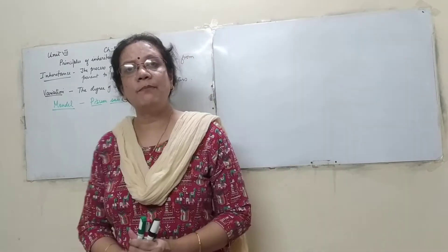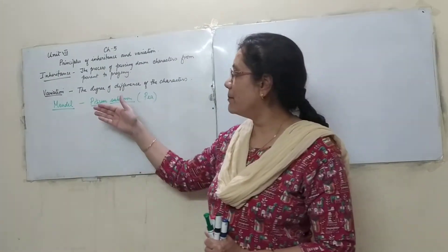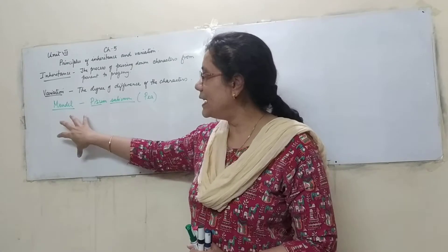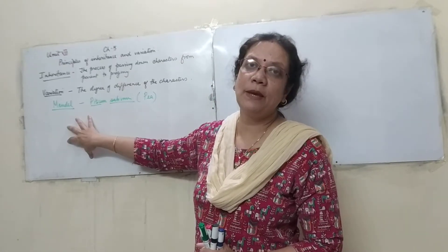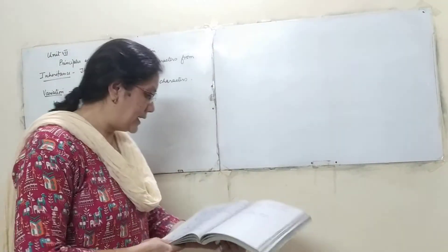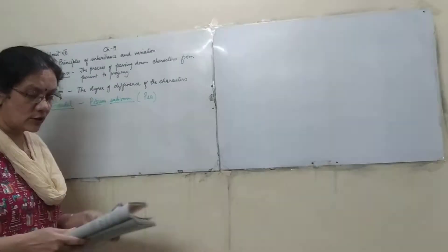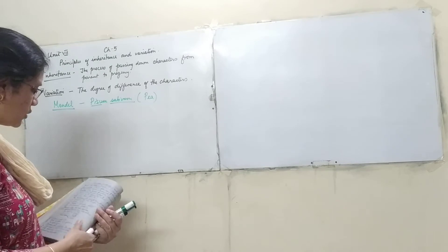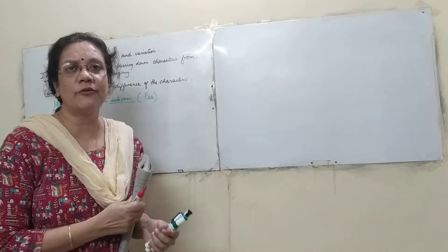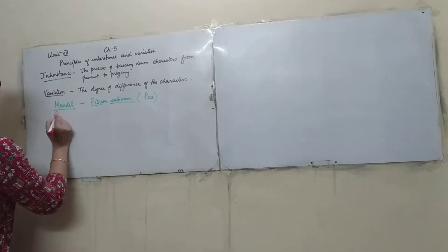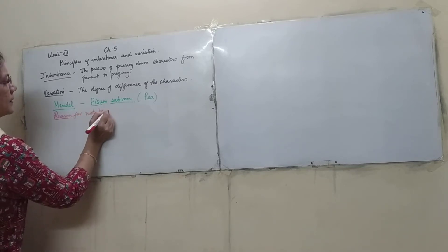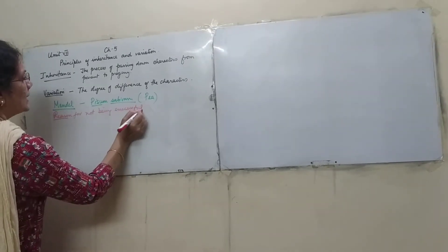Now we have to study his work on Pisum sativum — what characters he had chosen and why he chose them. He was quite lucky in choosing the pea plant. We also need to remember the reasons for his work not being successful at that time, as a small question or two-mark question is often asked on this topic.